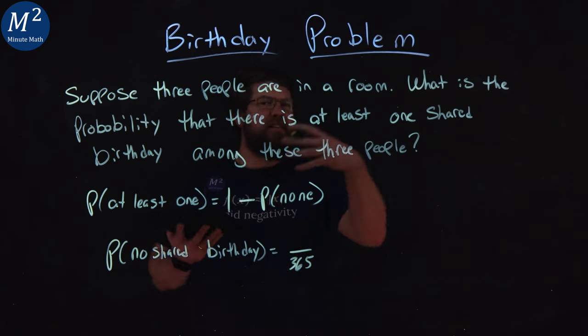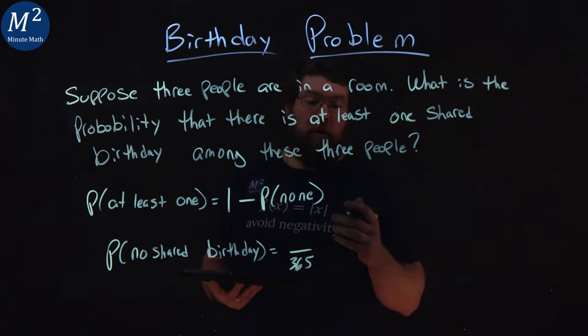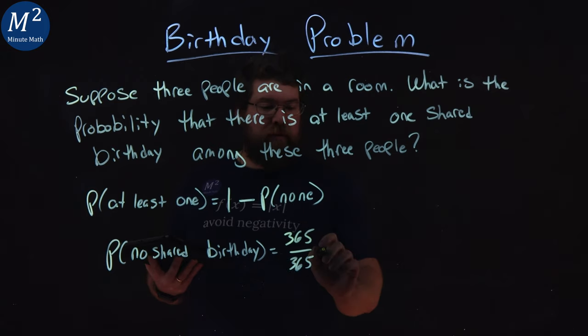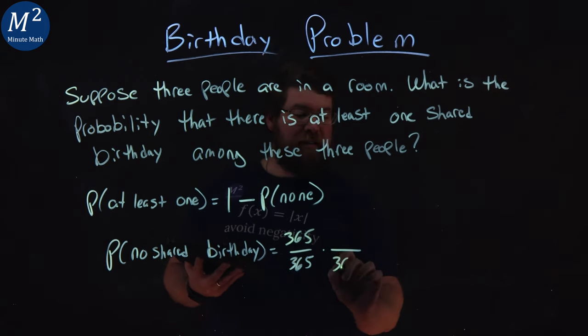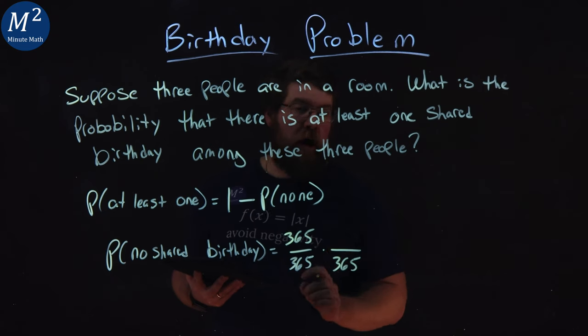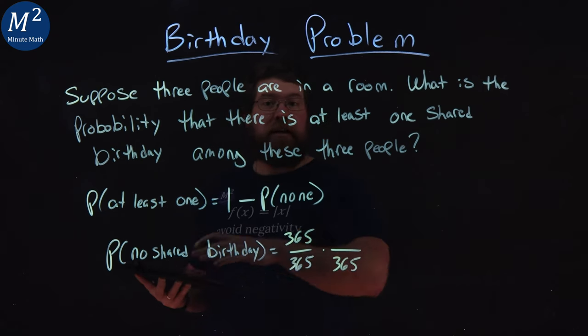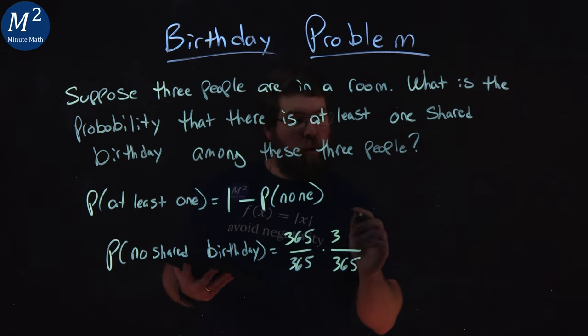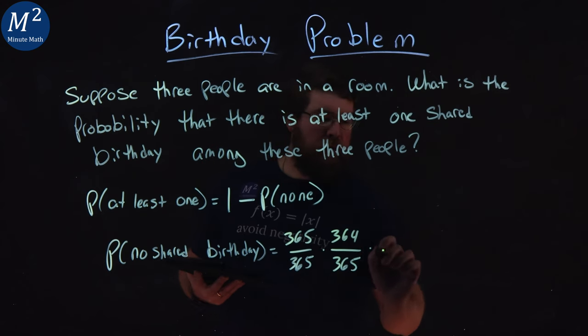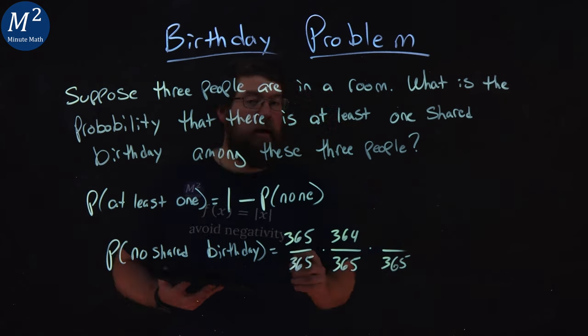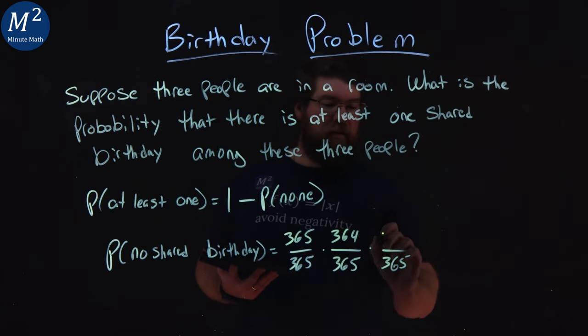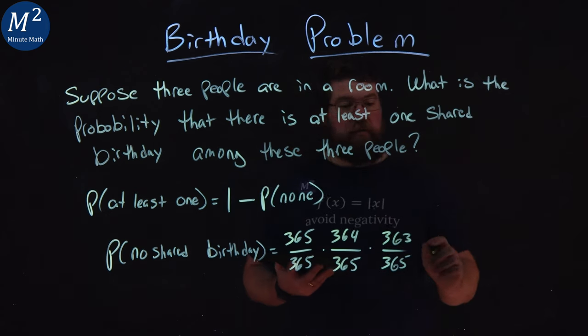The first person has 365 days that they can have a birthday. It only matches because it's just the first one. Next, there's still 365 days total in a year, but the next person to not share with the first person can pick any day out of the 364 that are left. The third person, same idea. There's 365 days to choose from, but they can't pick the first or second person's birthday. So 363 days left for them to choose from.